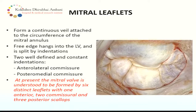The mitral leaflet is a continuous veil attached to the circumference of the mitral annulus. The free edge hangs into the left ventricle and is split by indentations. There are two well-defined and constant indentations: the anterolateral commissure and the posteromedial commissure. At present, the mitral valve is understood to be formed by six different scallops — one anterior, two commissural, and three posterior.